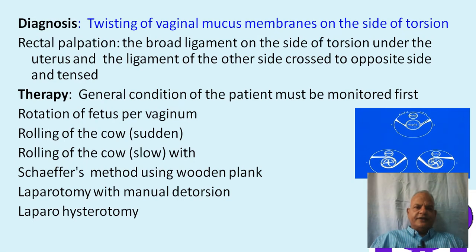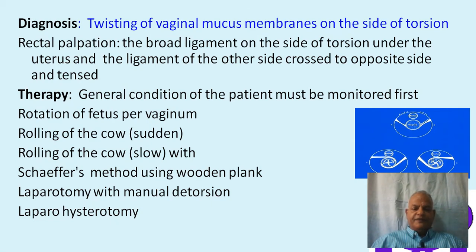Before attempting to treat any case of uterine torsion, the general condition of the patient must be monitored first. Therapeutic approaches include: rotation of the fetus per vaginum, which is often very difficult; rolling of the cow or buffalo with sudden rolling; rolling slowly using Schaeffer's method with a wooden plank; and laparotomy with manual detorsion or laparohysterotomy to remove the fetus.